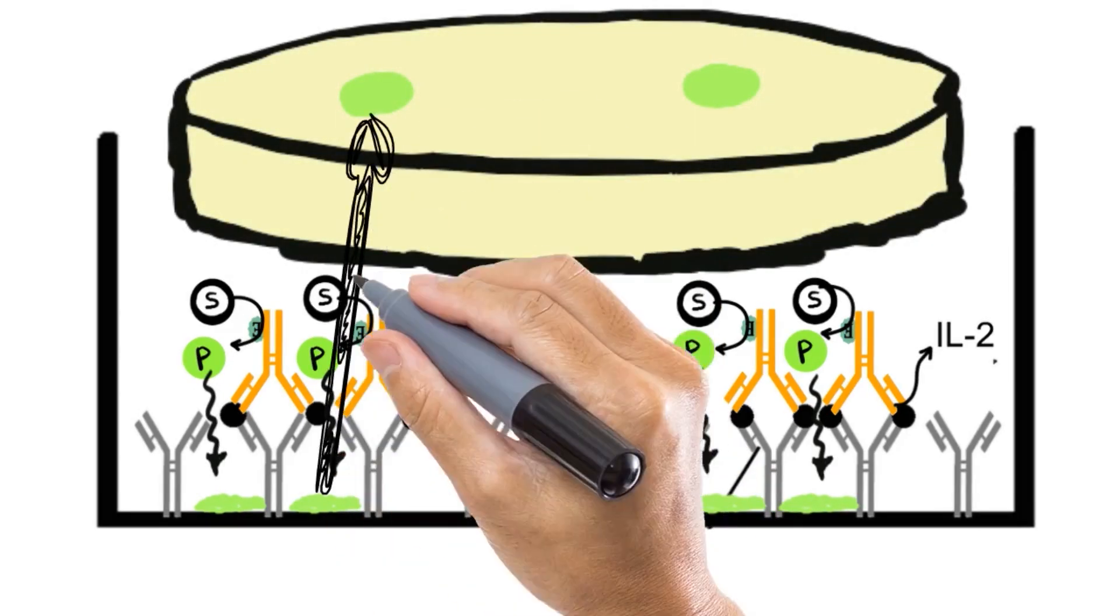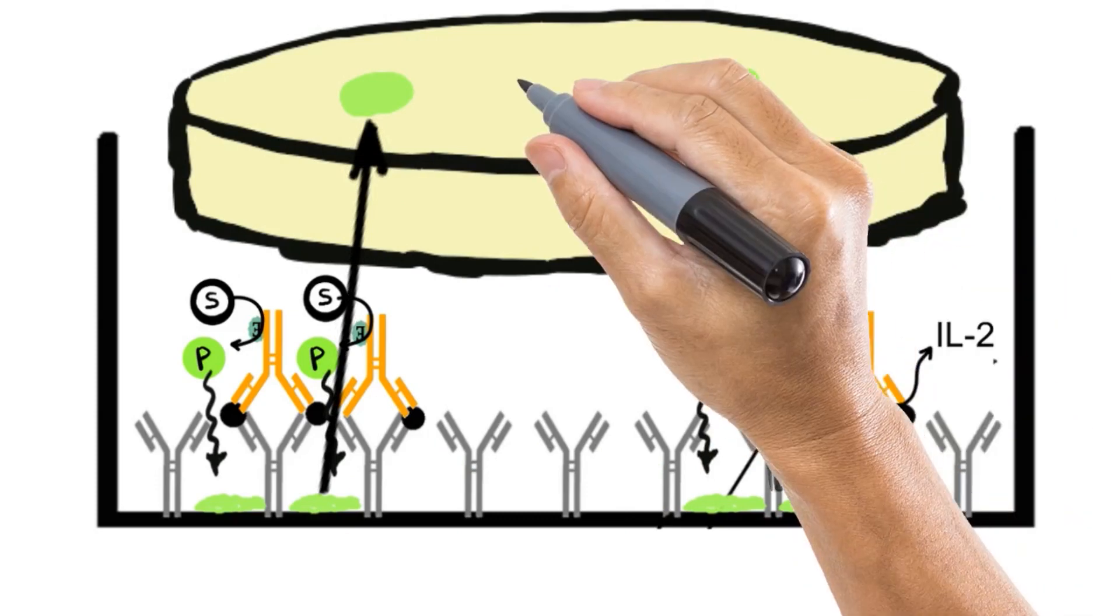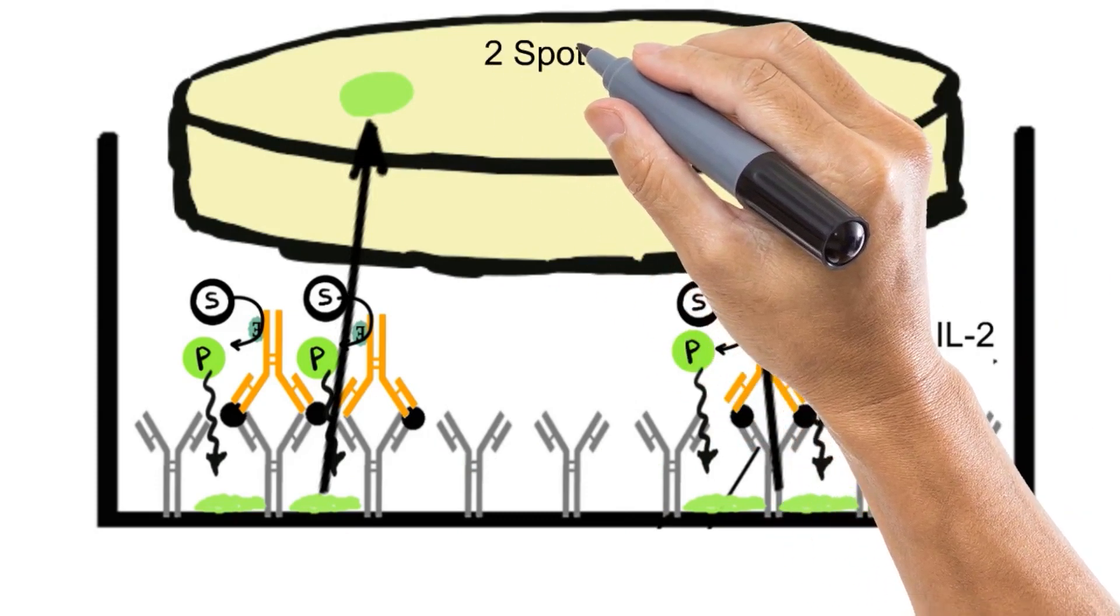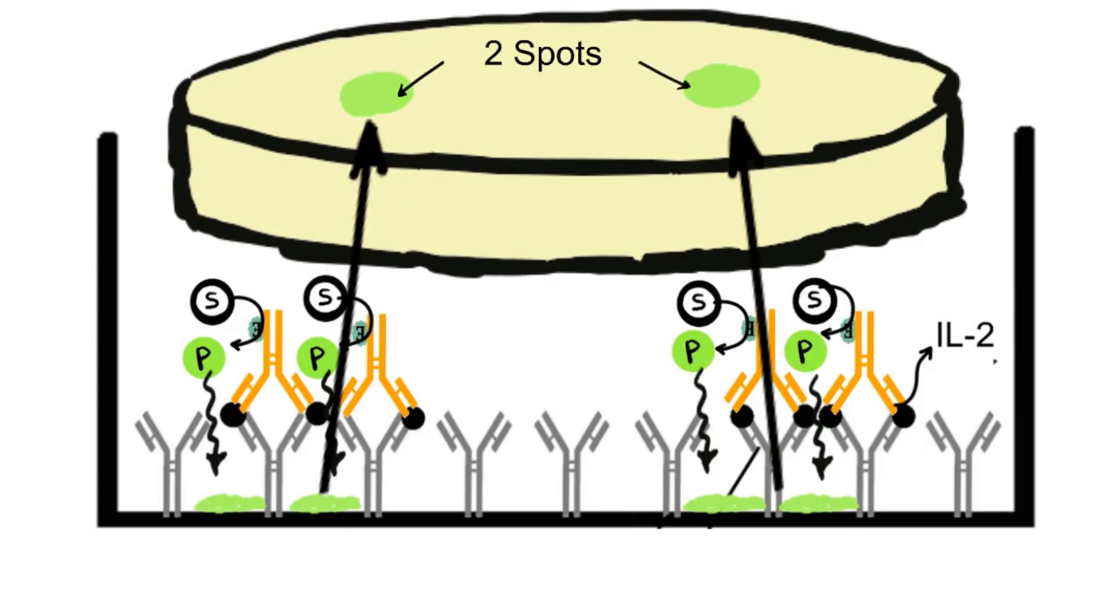And this will develop a colored spot in the well like this. Here, two spots are developed because two interleukin 2 producing cells were settled in the respective area.